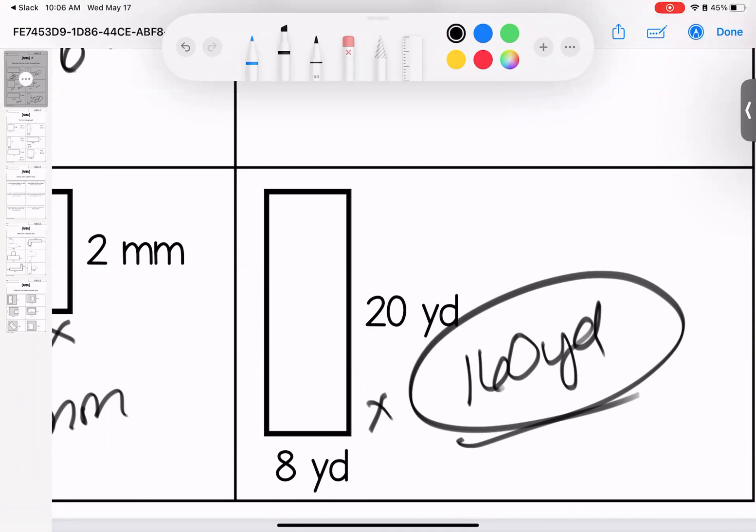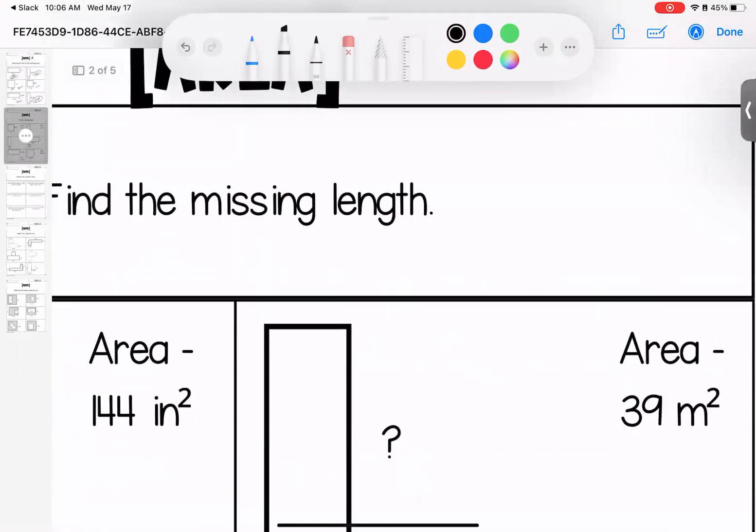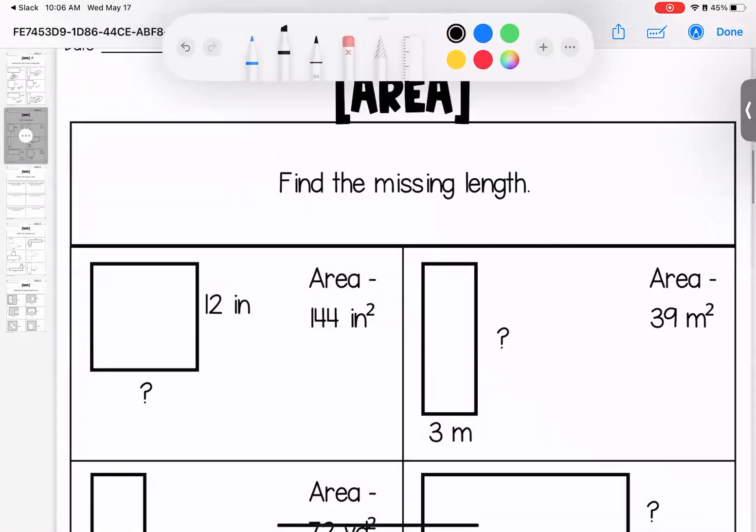For this one we had to find the missing length. So 12 times what gives me 144? 12 times 12. 3 times what gives me 39? If you can't think of it, you can do the division.